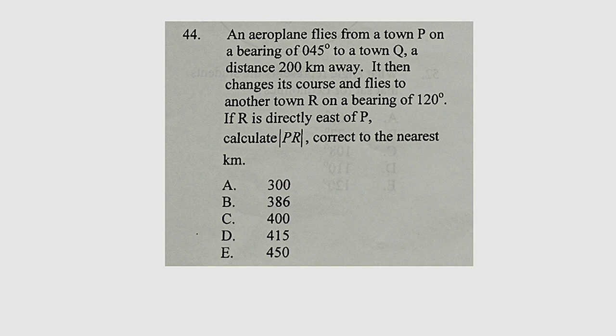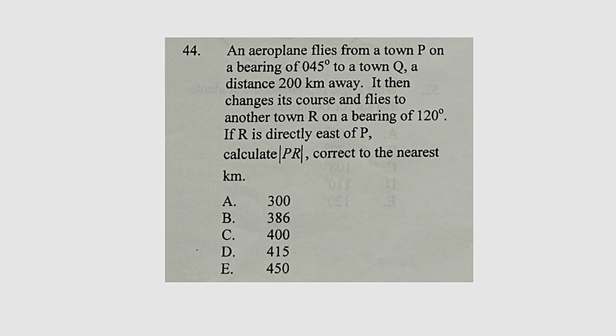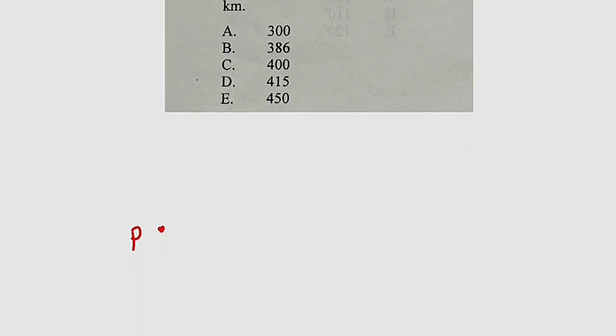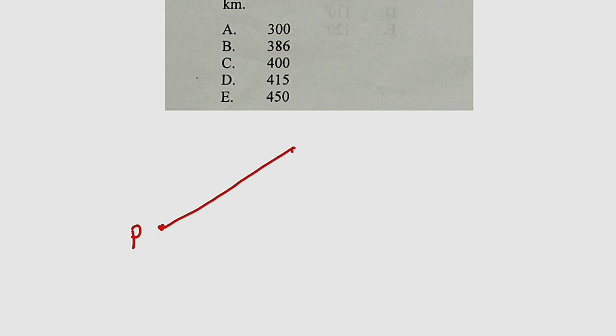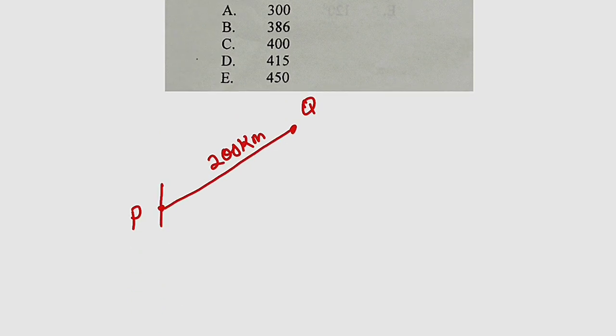Okay, let us make a rough sketch of this one. You should know that the plane started from town P. So let us assume we have a town P right here. It travels to another town Q on a bearing of 45 degrees. So let us assume it is somewhere here. This is town Q. Distance is 200 km apart, and the angle here is 45 degrees.